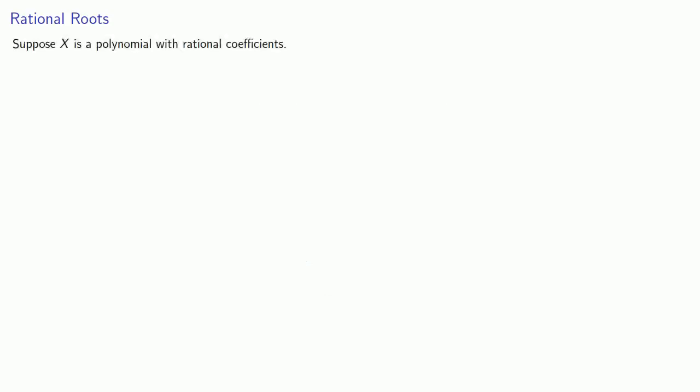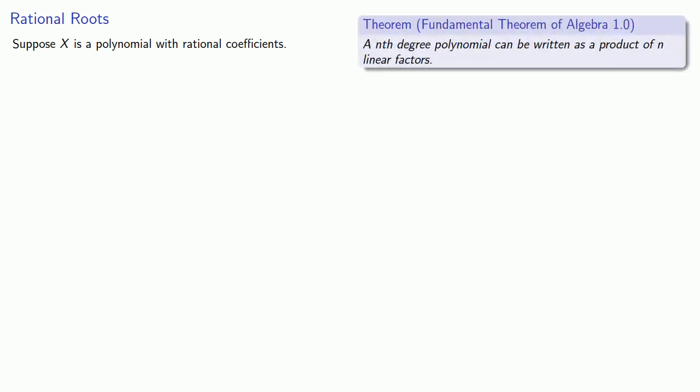Suppose X is a polynomial with rational coefficients. The fundamental theorem of algebra, version 1.0, tells us that an nth degree polynomial can be written as a product of n linear factors. So let's write those out. To keep this as general as possible, we'll write those linear factors in the form something times x minus something else. So how can we find the roots?